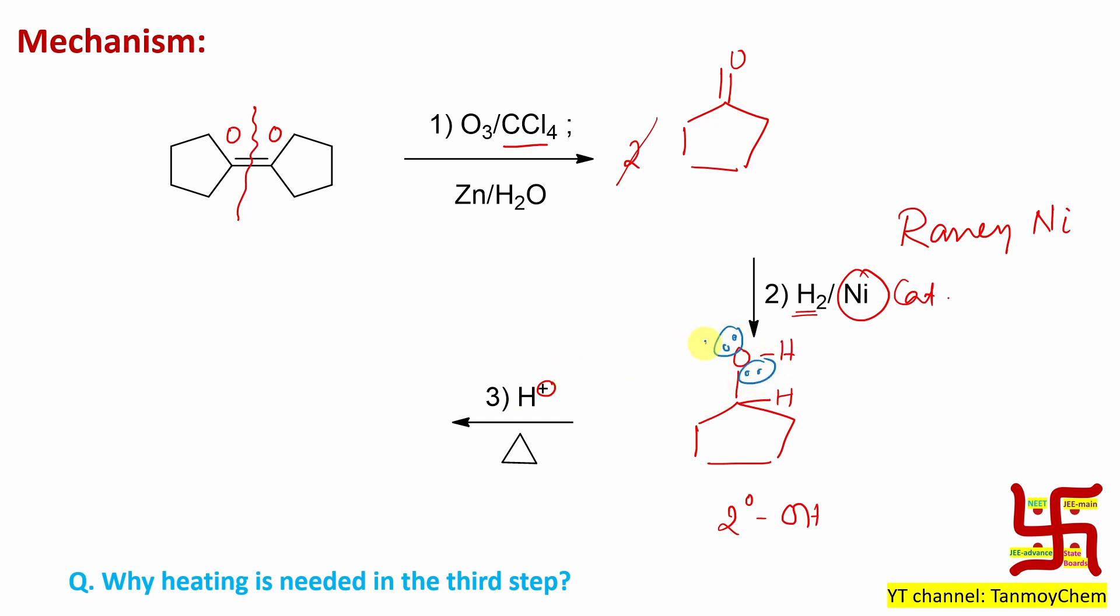What will be the product? Product will be OH2+. And electronegative atom oxygen carrying positive charge, it is obviously not stable. So in the next step what happened? Next step, dehydration takes place. Why? Because heating is given. I shall explain this heating part after some time.